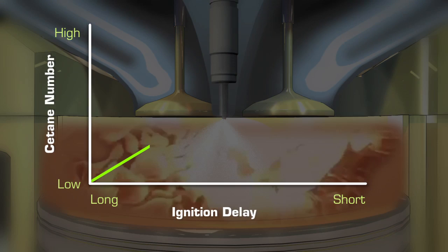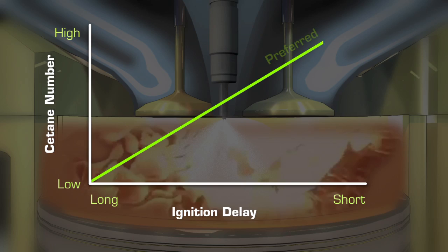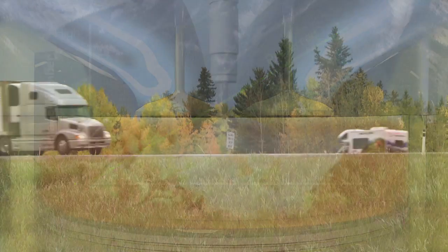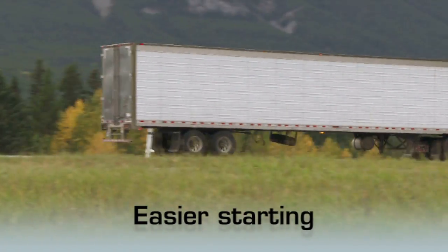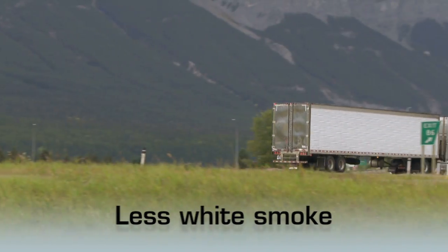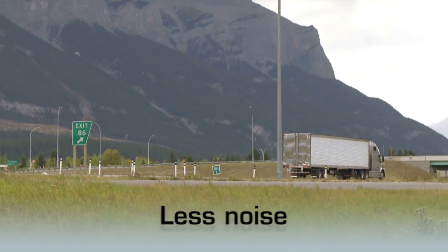Fuels with higher cetane numbers have a shorter ignition delay and combustion begins sooner. As a general rule, these fuels offer better engine performance. This can lead to easier starting, less white smoke on startup, less noise and lower emissions.